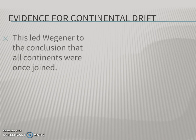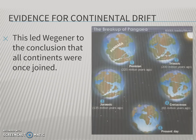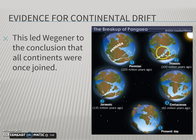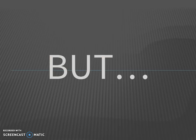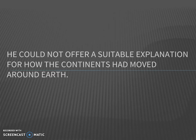All three pieces of evidence led Wegener to the conclusion that all the continents were at one point joined together, and then over time moved to their current present-day location — which sounds pretty great, except there's a problem. The evidence points to Pangaea and continents moving to where they are today, but when Alfred Wegener was asked how the continents moved, he couldn't offer an explanation.